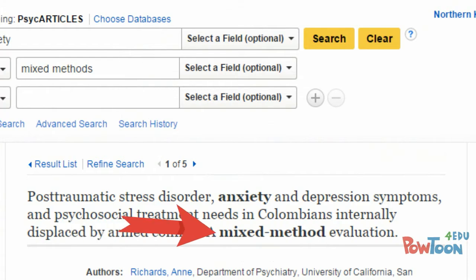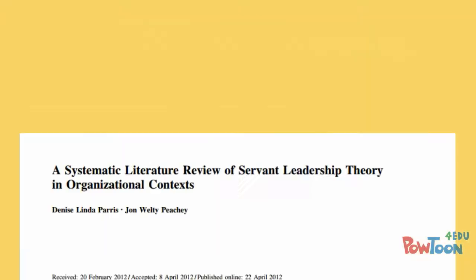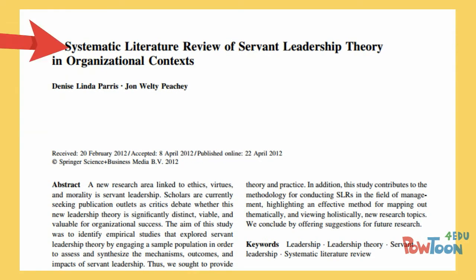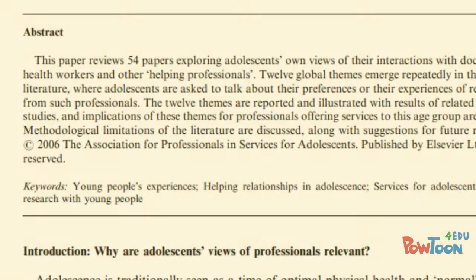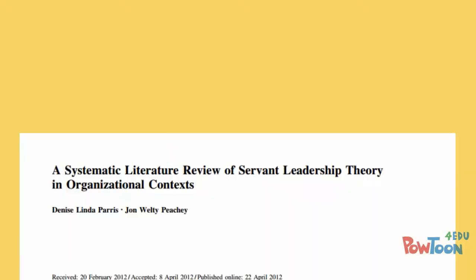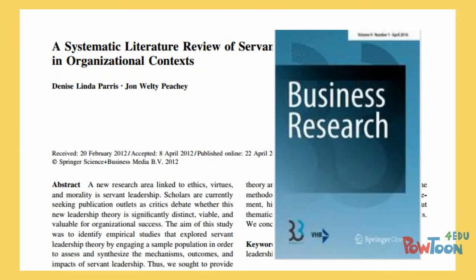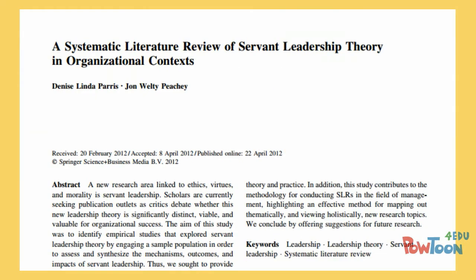Another type of article often found in a scholarly journal is known as a literature review. In a literature review, the author does not conduct their own research experiment. Instead, the author reviews articles written by others and summarizes their findings. While literature reviews are published in scholarly journals, they are not usually considered research articles.